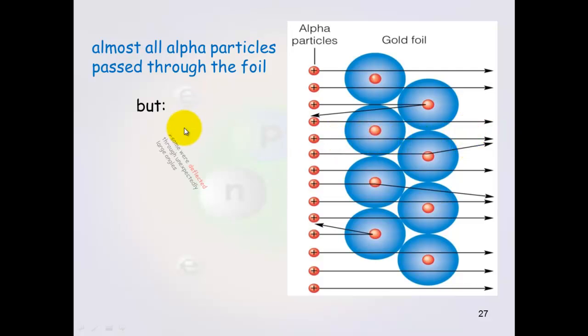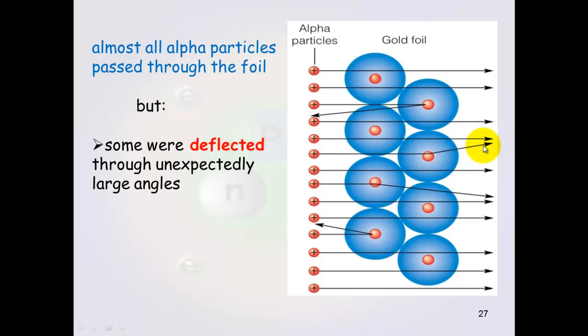Almost all of the alpha particles, so the positive alpha particles, passed straight through the gold foil. You can see most of them are going straight through the gold foil. Some of these particles however, were deflected at large angles. And you can see that here, this one has been deflected. But not many of them have been deflected. You can also see here that some of them were reflected.